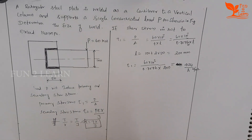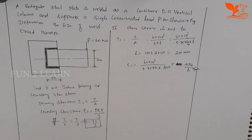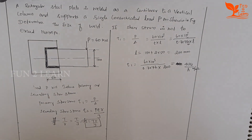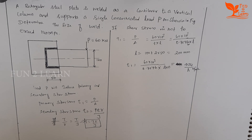Hello everyone! We have a problem with a welded joint in a machine design. A rectangular steel plate is welded as a cantilever to a vertical column and supports a single concentrated load P, as shown in the figure. Determine the size of the weld. The shear stress is not to exceed 140 MPa.